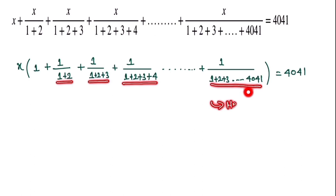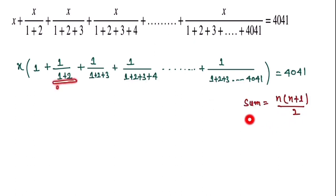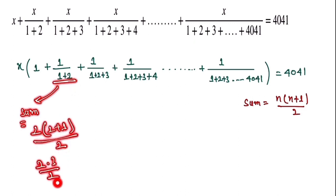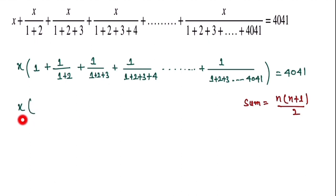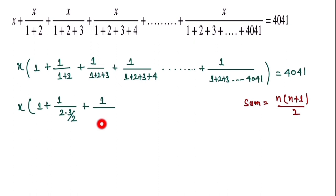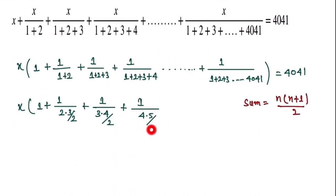Here we use the sum formula for consecutive integers: the sum 1+2+...+n = n(n+1)/2. So 1+2 = 2·3/2 = 3, which checks out. Using this, the terms become 1/(2·3/2), 1/(3·4/2), 1/(4·5/2), and so on. So we can write: x times (1 + 1/(2·3/2) + 1/(3·4/2) + 1/(4·5/2) + ...).